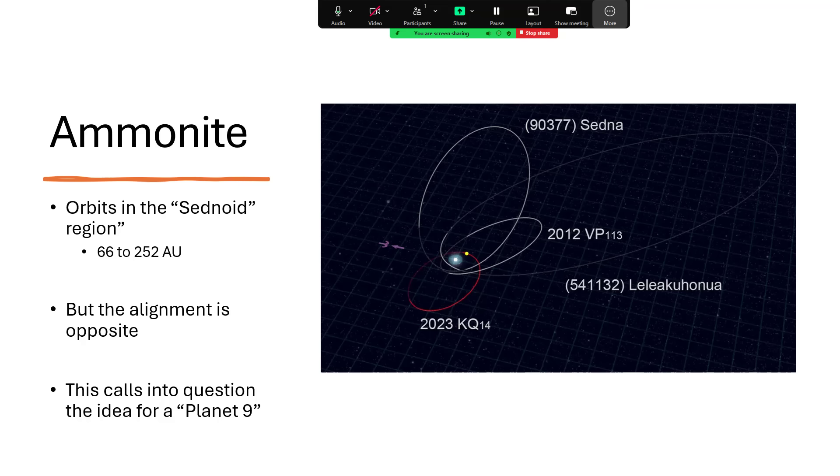And these are interesting because they're all on one side of the solar system with their close approach to the sun, almost in the same region. And this was thought to be evidence that maybe Planet Nine was out there corralling them into these orbits and leaving the other side of the solar system essentially free of these objects due to gravitational interactions. But Ammonite 2023 KQ14 seems to be breaking the mould and perhaps calls into question the whole idea of the presence of there being a significant large outer planet, Planet Nine.